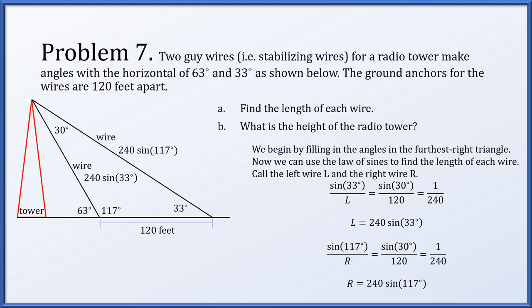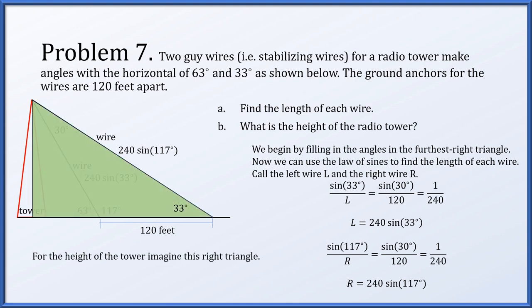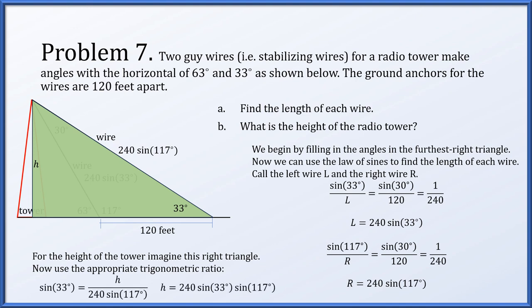To find the height of the radio tower, we use the right triangle formed by the right wire. The wire length is 240 times sin(117°) and the angle at the base is 33°. Since sin(33°) equals opposite over hypotenuse, h equals 240 times sin(117°) times sin(33°). So the height of the radio tower is 240 sin(33°) sin(117°) feet.